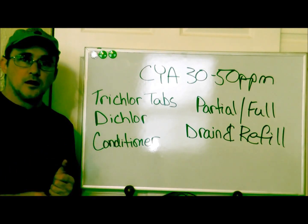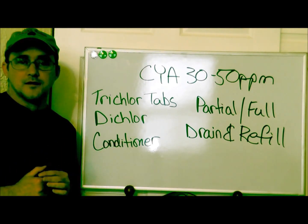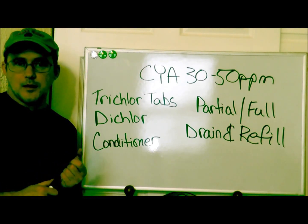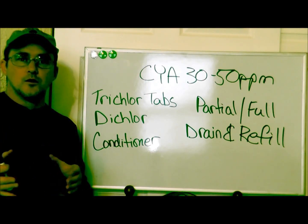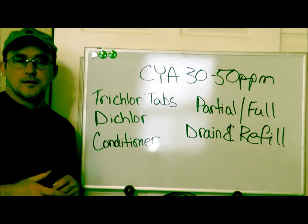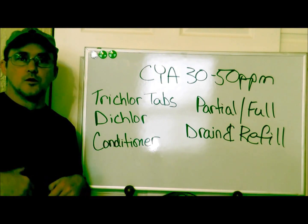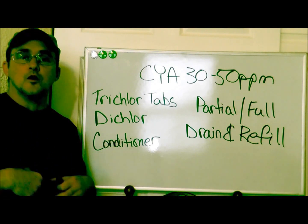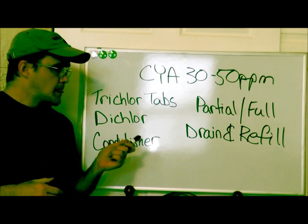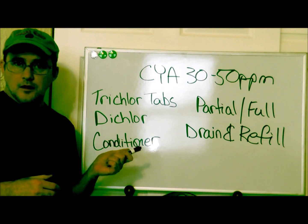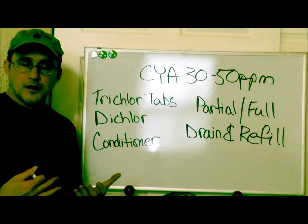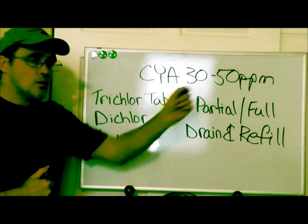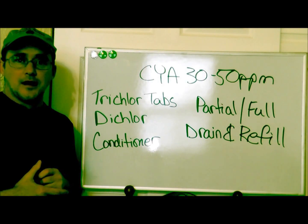The second reason could be the use or overuse of dichlor. Dichlor is a very special kind of chlorine — it's a stabilized form of chlorine, unlike liquid or granular chlorine. The only time you want to use dichlor is when you have to get chlorine and conditioner stabilizer in your pool very quickly. You don't want to use it for your weekly pool maintenance or for weekly shocking. That's another reason why your cyanuric acid or stabilizer can get out of hand.